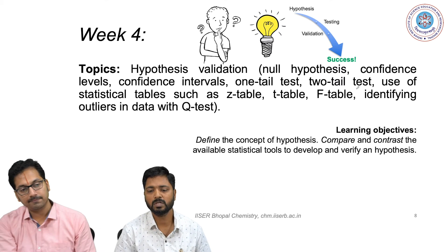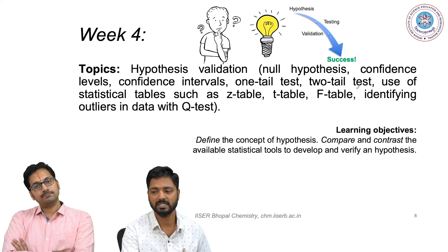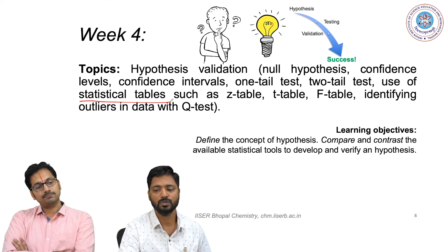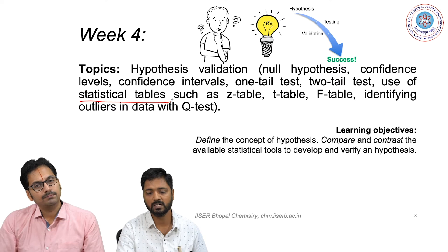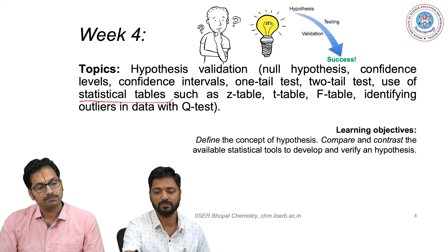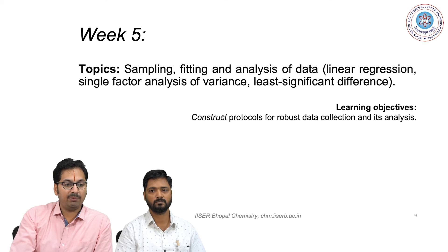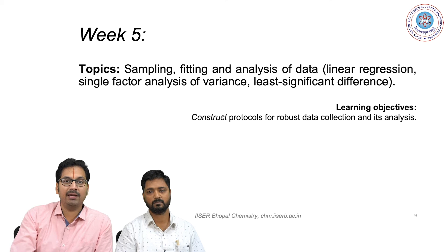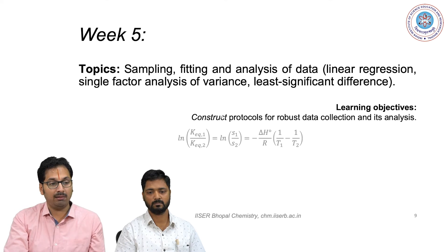Week 4 will focus on hypothesis validation through the use of a wide variety of statistical tables. You will get introduced to the Z tables, T tables, and F tables. You will also understand what an outlier is and how to identify it with the Q test. Having obtained the data and formed a hypothesis, an important aspect will be properly sampling your data, getting it fit, and doing the analysis so that the parameters you want to measure are reliably and accurately determined.